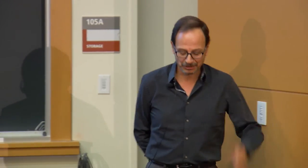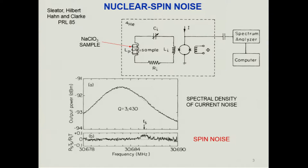It was also frustrating because there were other projects going on in John's group, like MQT and energy quantization levels in Josephson junctions. There was another experiment that was very interesting to me, that John was carrying out in collaboration with the late Erwin Hahn: the detection of nuclear spin noise. The experiment had a sample containing chlorine spins placed in the inductor of an LC resonator.